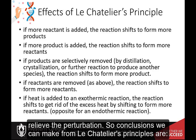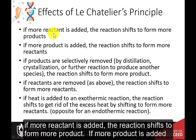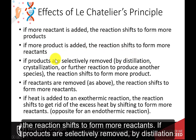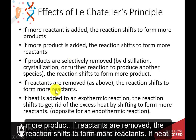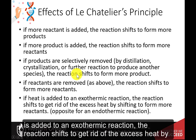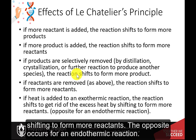Conclusions we can make from Le Chatelier's principle: if more reactant is added, the reaction shifts to form more product. If more product is added, the reaction shifts to form more reactants. If products are selectively removed by distillation, crystallization, or further reaction to produce another species, the reaction will shift to form more product. If reactants are removed, the reaction shifts to form more reactants. If heat is added to an exothermic reaction, the reaction shifts to get rid of the excess heat by shifting to form more reactants. The opposite occurs for an endothermic reaction.